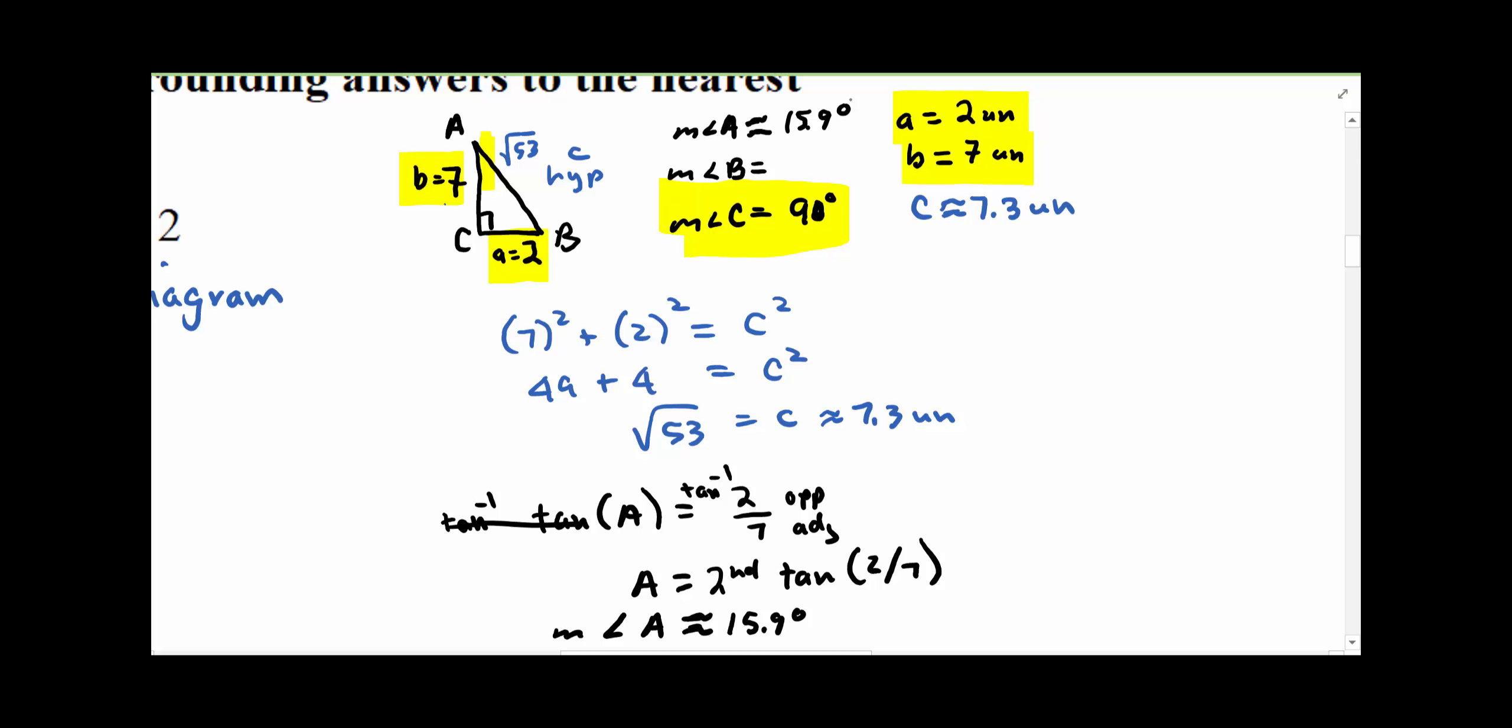And then I'm going to take 180, subtract 90, subtract 15.9 degrees, and that gives us about 74.1 degrees. Alright, that's it for this one.